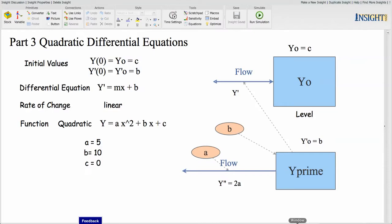First we start with the initial values for the equations. In this case, y of zero equals y sub zero equals c, the constant in the equation, and y prime, which is the first derivative of the equation function y, equals y prime sub zero is b. So we have these constants in the equation.